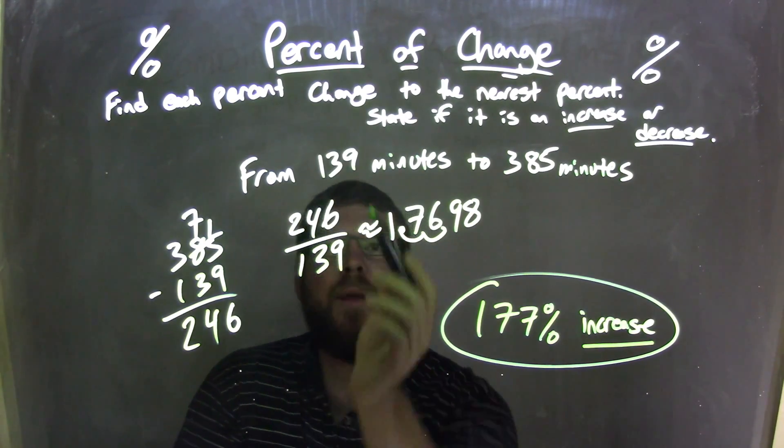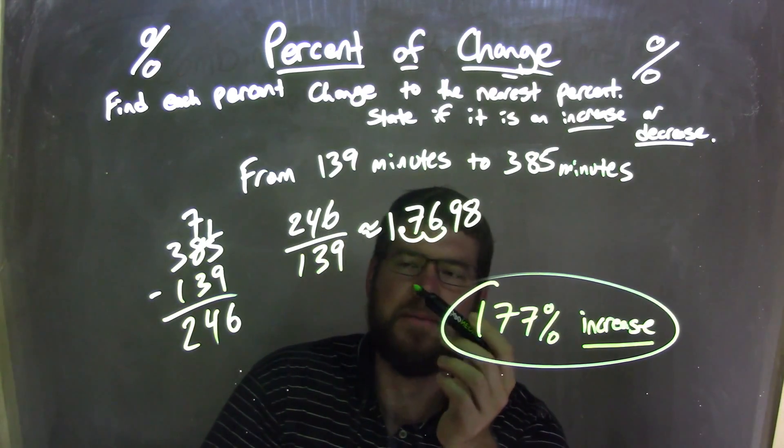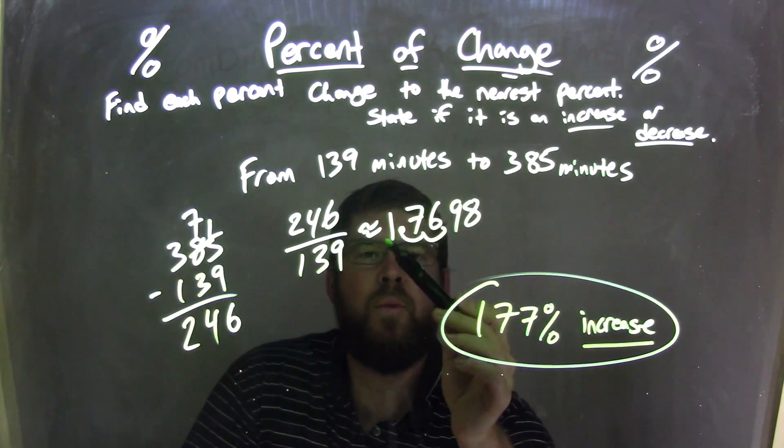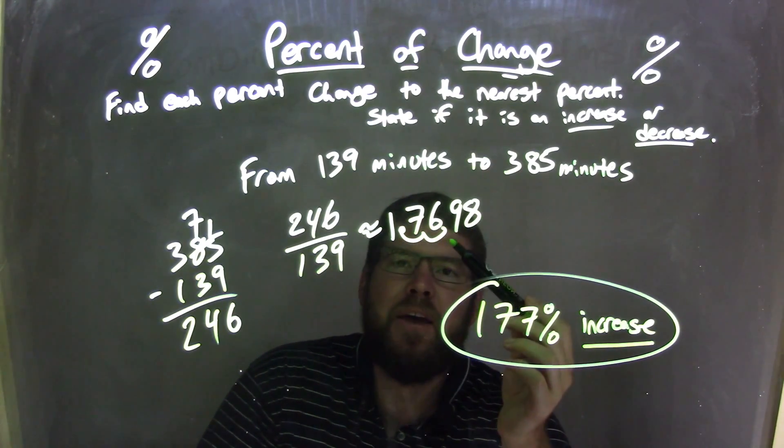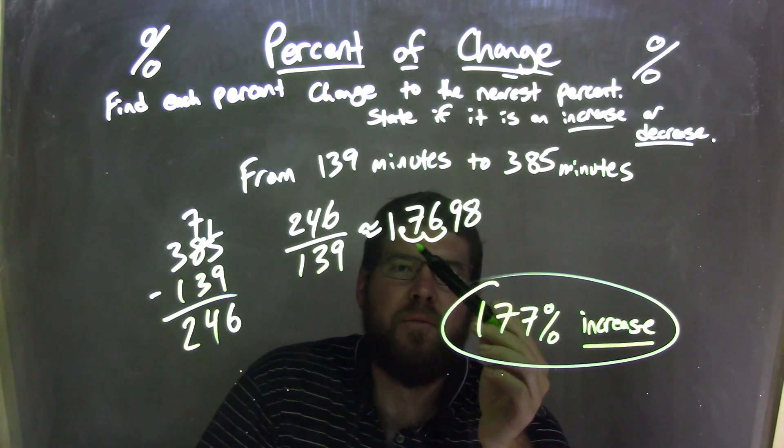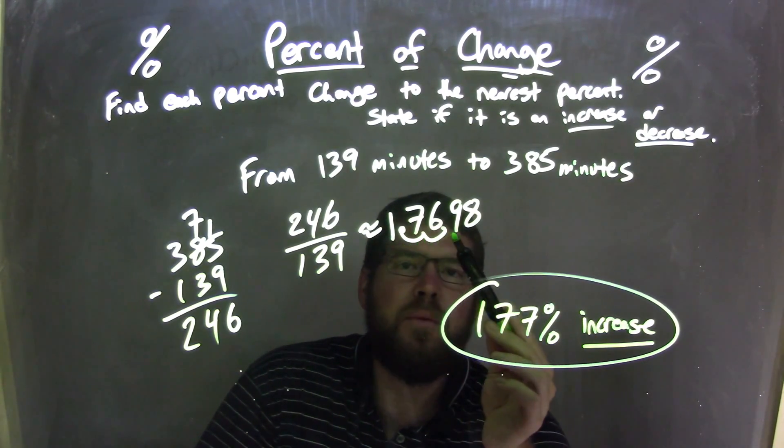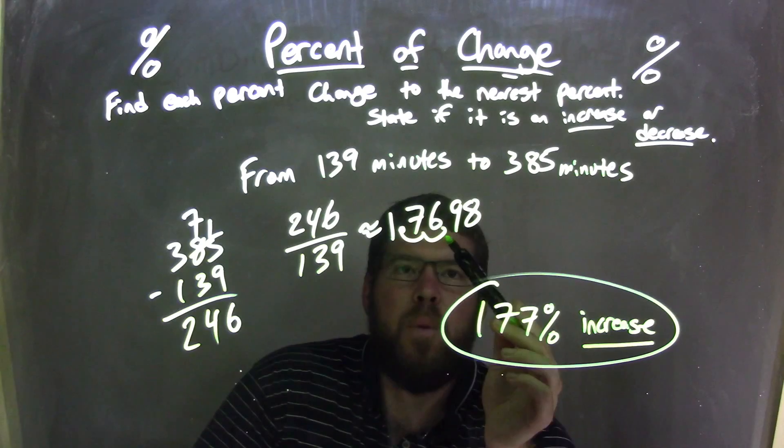At 246, I divided by my first number, and I used my calculator for this one. So 246 divided by 139 came out to be approximately 1.7698. To convert a decimal to a percent, we just move the decimal over two positions.